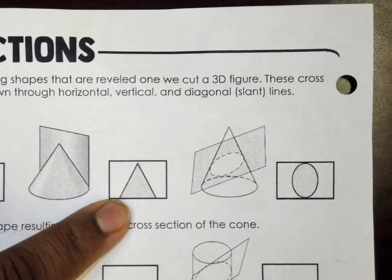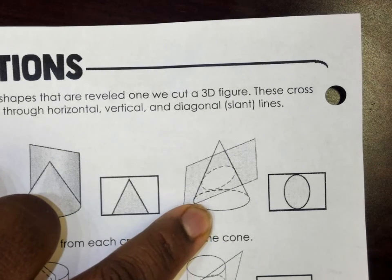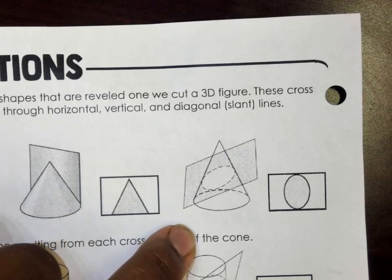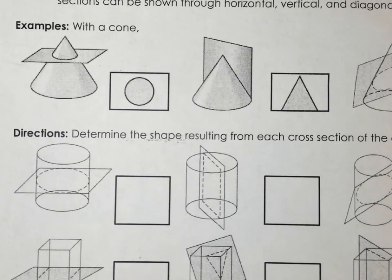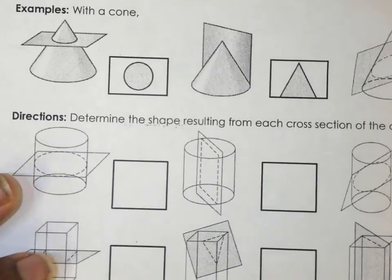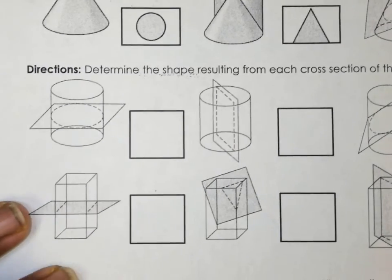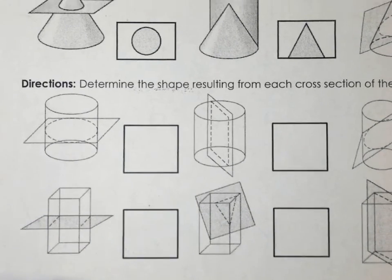When they split it vertically, and then when they split it diagonally - oval, thank you. All right, so that's with the cone. It's not necessarily all the same shapes when you do other things, but we'll figure it out as we go. So determine the shape resulting from each cross section of - well, these shapes are not cones. It's a cylinder and prism.